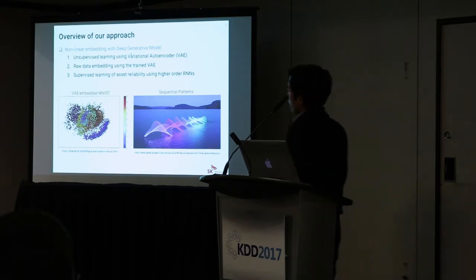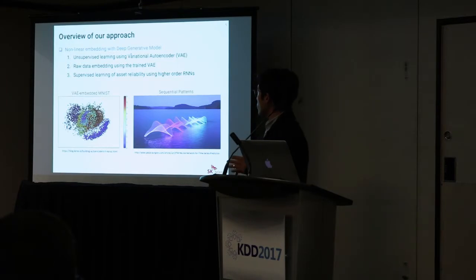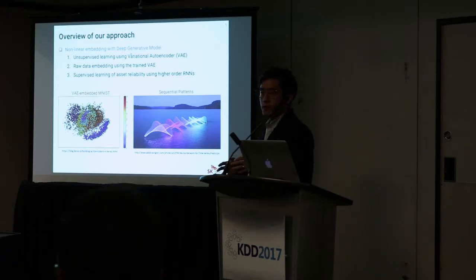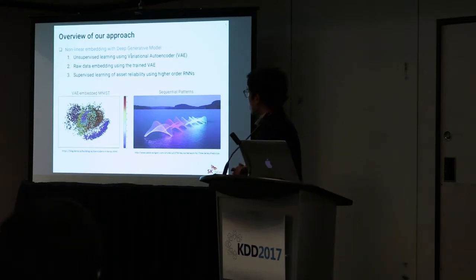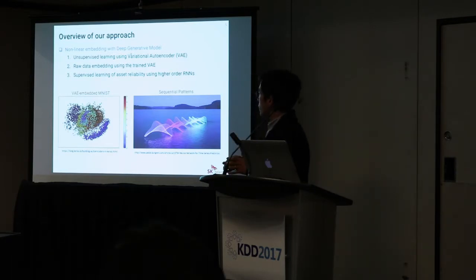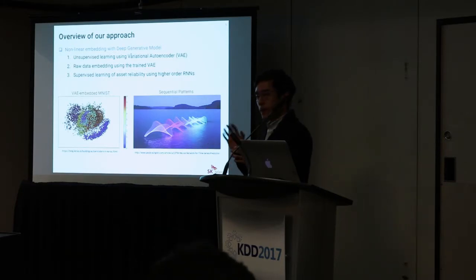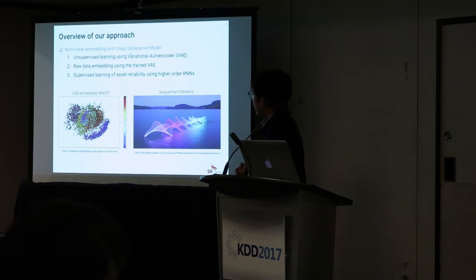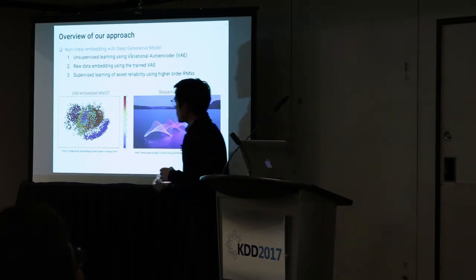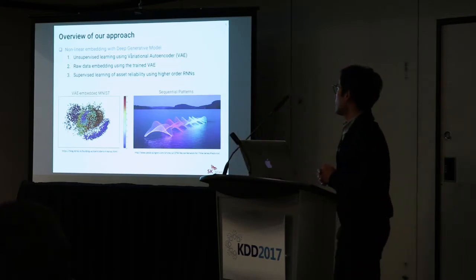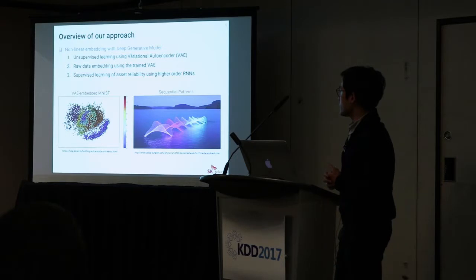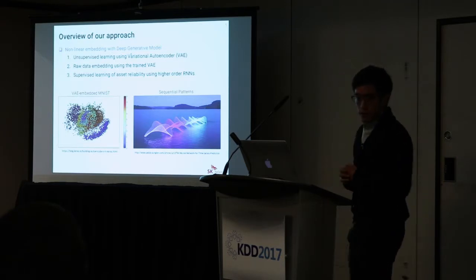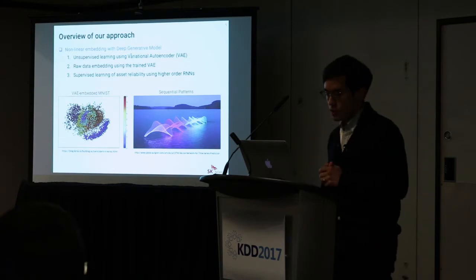Here is an overview of our approach. We perform nonlinear embedding obtained from a deep generative model, and use that nonlinear embedding before building our reliability model that associates input sensor variables with the future reliability of a given asset at a given time. The main components of our approach are a variational autoencoder, which is one of the deep generative models, and sequential modeling done by a higher-order RNN such as GRU and LSTM.